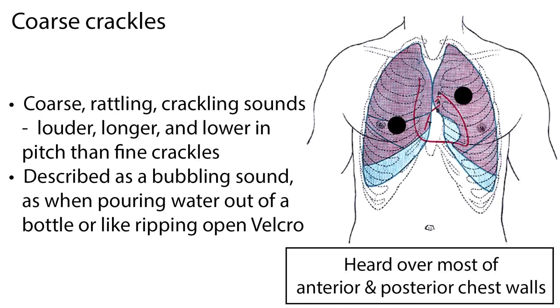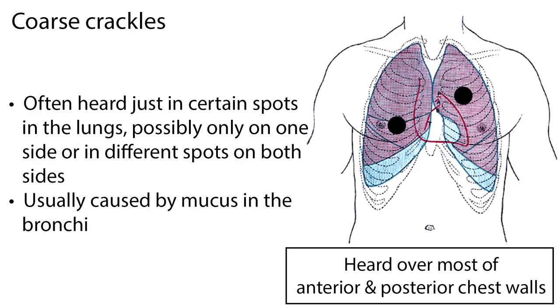Coarse crackles sound like coarse, rattling, crackling sounds, but are louder, longer, and lower in pitch than fine crackles. They are described as a bubbling sound, like pouring water out of a bottle, or like ripping open Velcro. Coarse crackles are often heard just in certain spots in the lungs, possibly only on one side or in different spots on both sides. They are usually caused by mucus in the bronchi. Listen to the sound of coarse crackles in a patient with pneumonia.